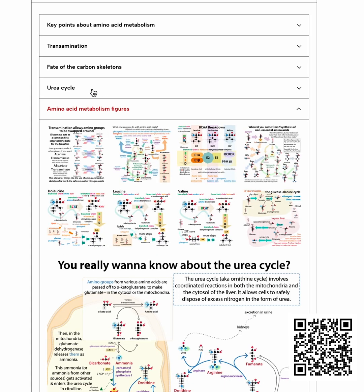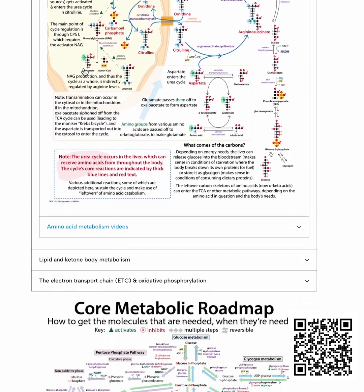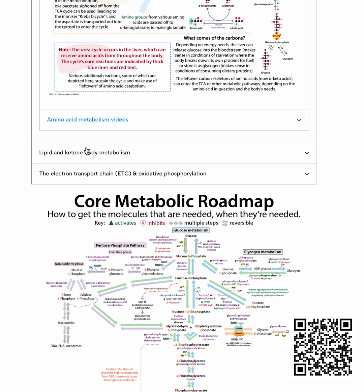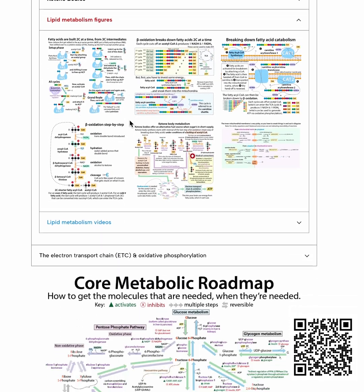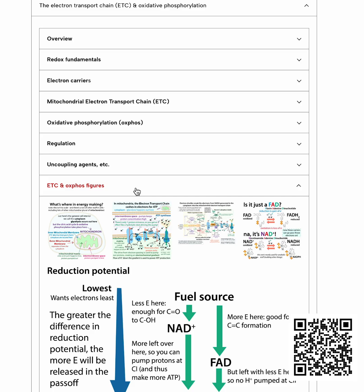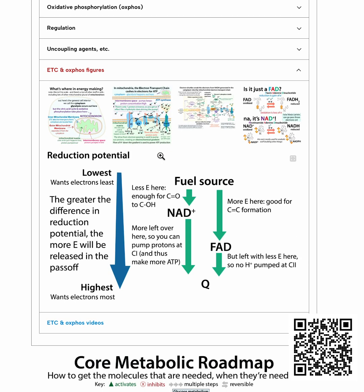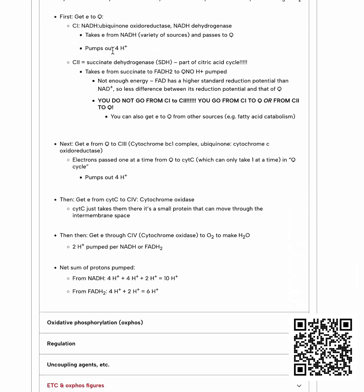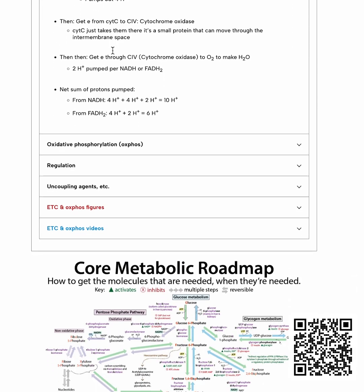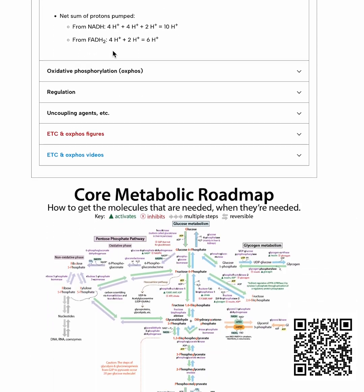The amino acid metabolism, urea cycle, transamination, key points, lipid and ketone metabolism — all these various things — as well as the electron transport chain and oxidative phosphorylation. I really try to go through and outline some of the key things to keep in mind and focus on.